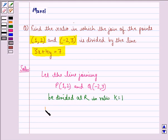Then the coordinates of point R will be (-2k+1)/(k+1) and (3k+2)/(k+1).